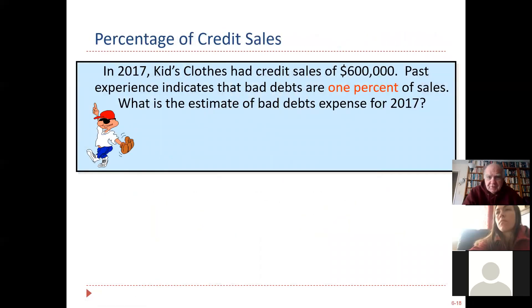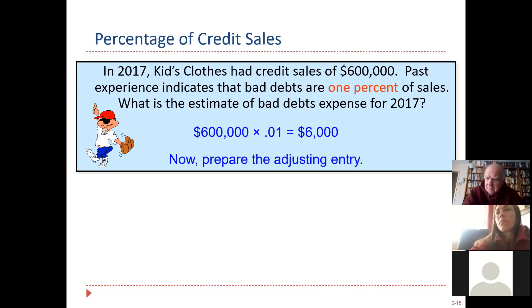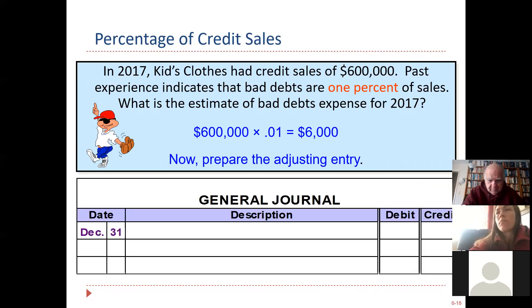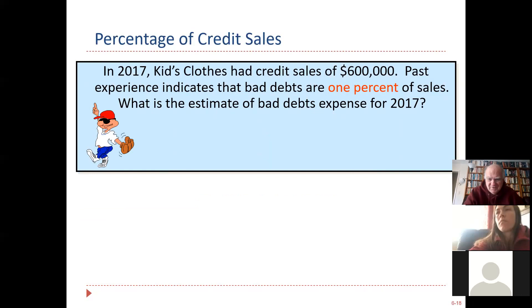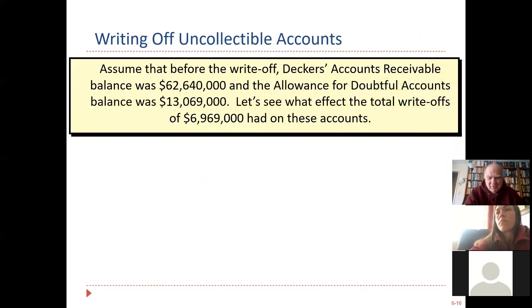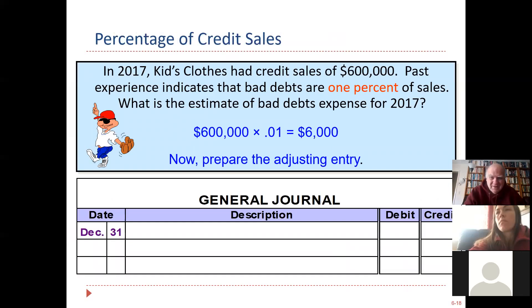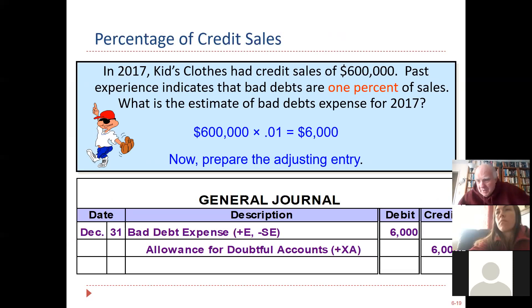They had credit sales of $600,000 and they think 1% is not collectible, so that would be $6,000. The journal entry: you debit bad debt expense and you credit the allowance for doubtful accounts. Now you have impacted things — you've reduced an asset and you've increased an expense. That's why when the write-off comes, there is no impact.